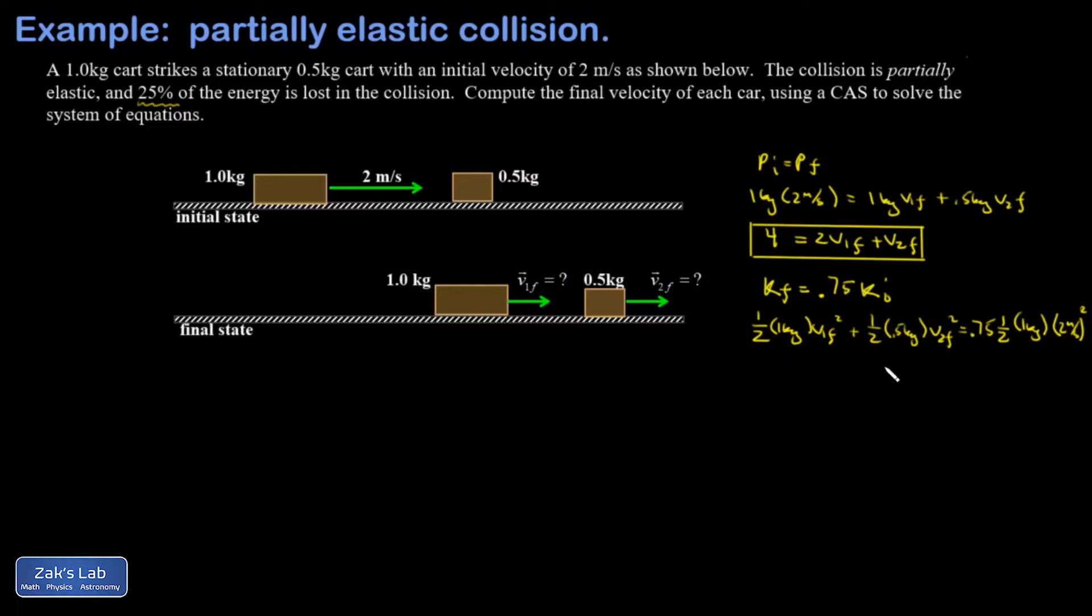Let's clean this up by getting rid of units, fractions and decimals. First, I can eliminate 1/2 from every term. Then multiply by 2 to get rid of decimals. So I have 2V1 final squared plus V2 final squared equals, on the right-hand side, 1.5. That's 2 times 0.75 times 2 squared, which is 4. So 1.5 times 4 is 6.